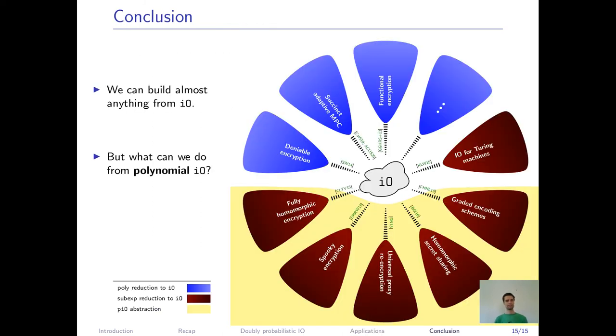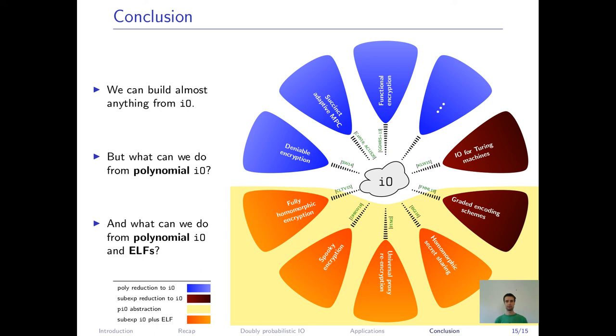Okay, to summarize, IO is extremely powerful and yields a vast amount of applications. So far, many of these applications involve a sub-exponential loss relative to IO, particularly the ones relying on probabilistic IO. Our DPIO framework allows to push this sub-exponential reduction loss away from IO, which is a novel and rather shaky assumption, to the much more well-studied exponential DDH assumption. Our DPIO framework can be applied to improve several security reductions. For instance, we avoid the need for sub-exponentially secure IO in the context of leveled homomorphic encryption, fully homomorphic encryption, spooky encryption, and homomorphic secret sharing. Also, there is subsequent work by Döttling and Nishimaki, who use our framework to avoid sub-exponential IO for universal proxy re-encryption. Okay, thank you for your attention.